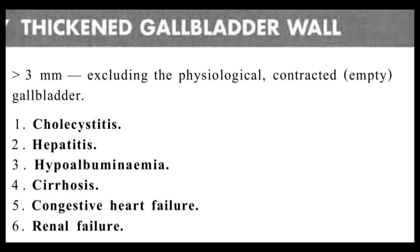In hypoalbuminemia, as the name suggests, the albumin level within the body becomes reduced below normal. As a result, there is an imbalance and water starts accumulating in the extracellular compartment of the body. As a result you can see there will be an enlarged gallbladder wall.